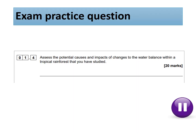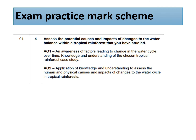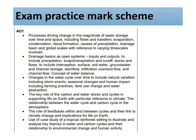Exam practice question: Assess the potential causes and impacts of change to the water balance within a tropical rainforest that you have studied, for 20 marks. This is from the 2018 paper. There are 10 marks each for AO1 and AO2. AO1 involves an awareness of factors leading to change in the water cycle over time, and knowledge and understanding of the chosen tropical rainforest case study. AO2 involves application of knowledge and understanding to assess the human and physical causes and impacts of changes to the water cycle in tropical rainforests.